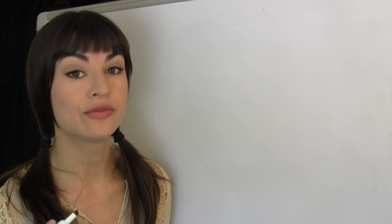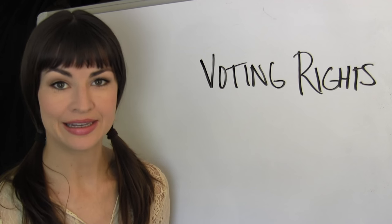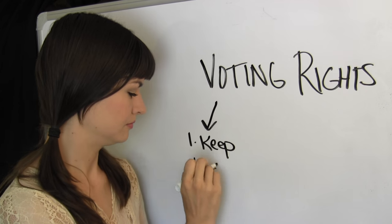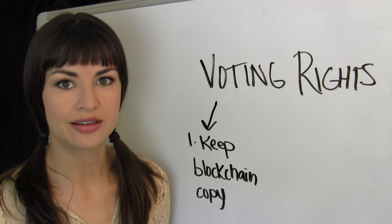And in exchange for voting rights, masternodes must perform three basic tasks. They must keep an updated copy of the blockchain at all times. Yeah, seems like a good idea.